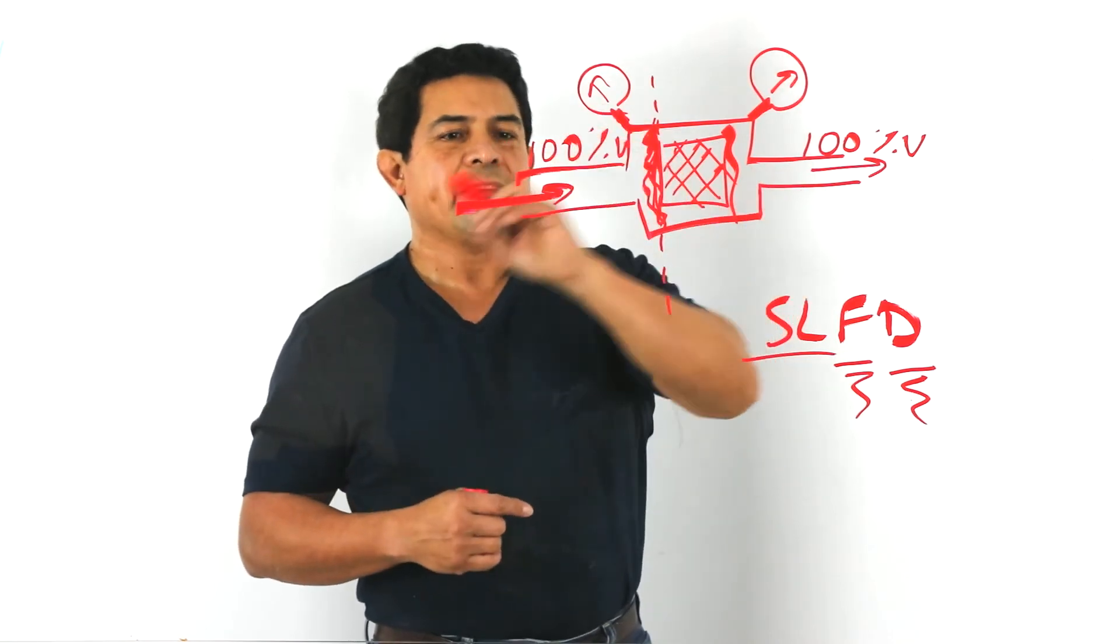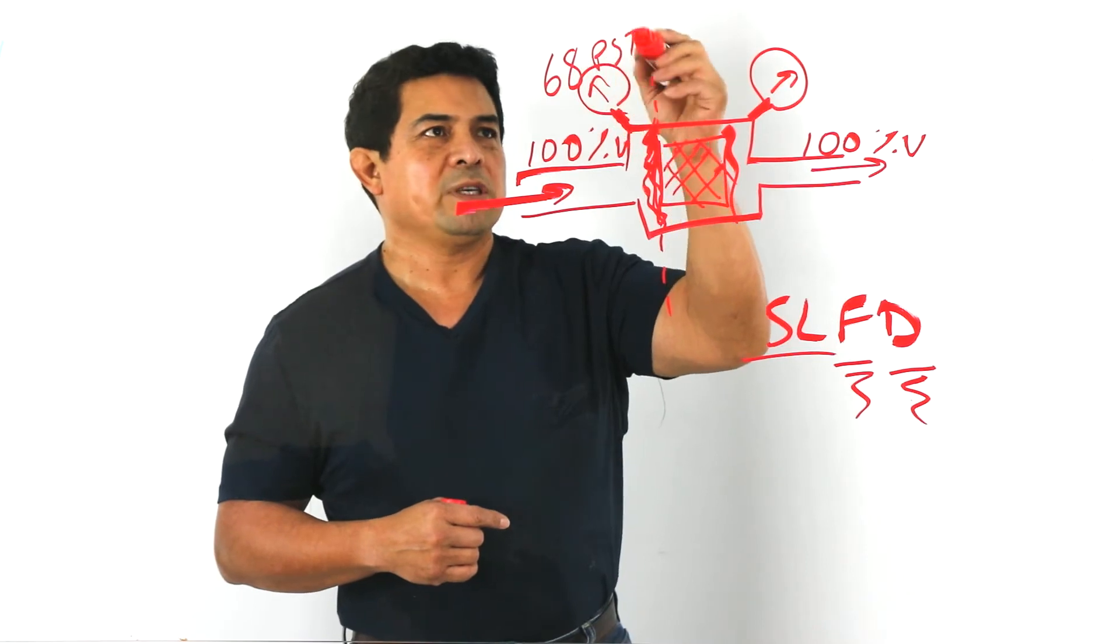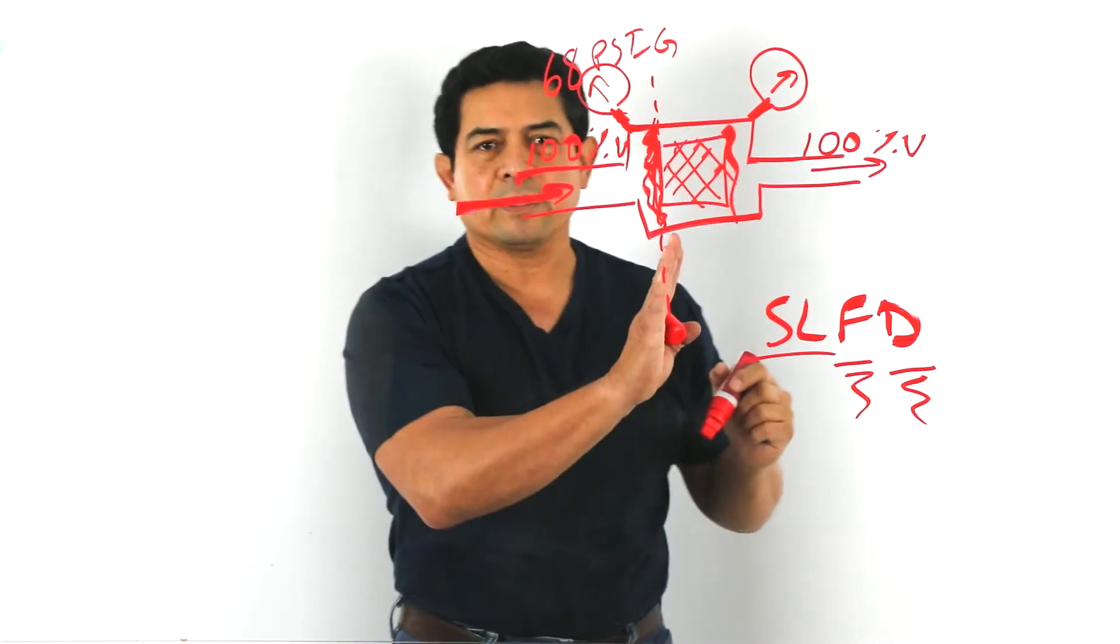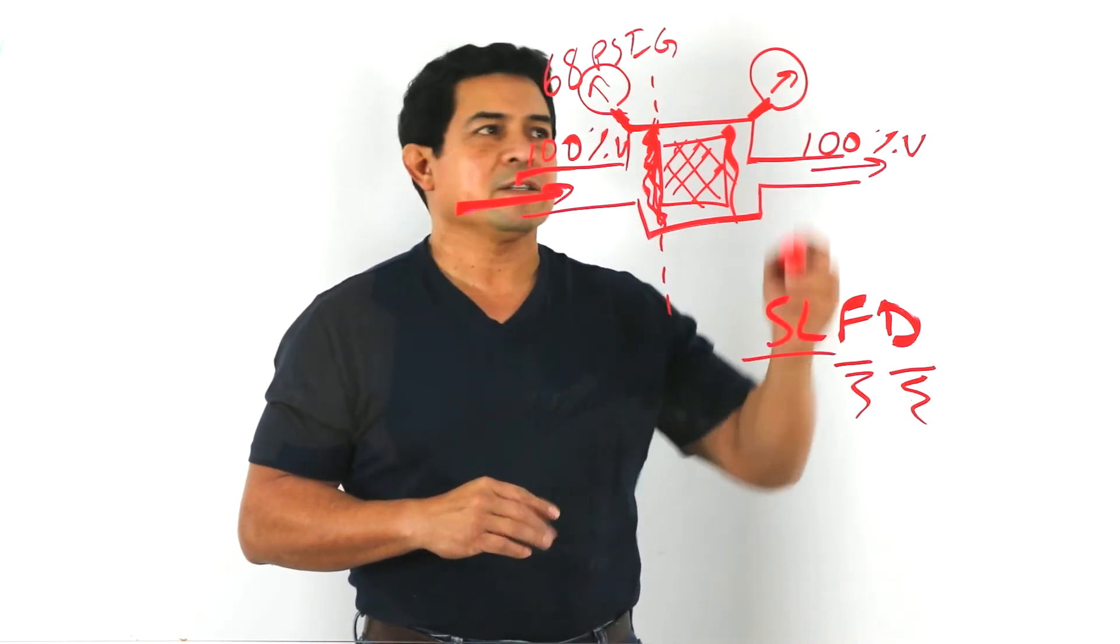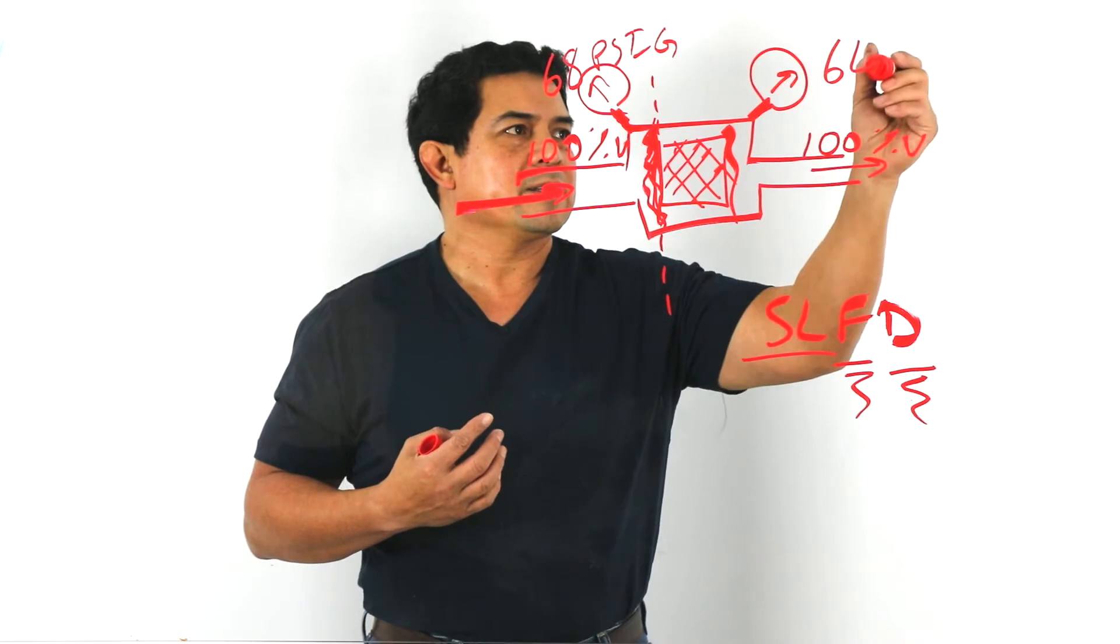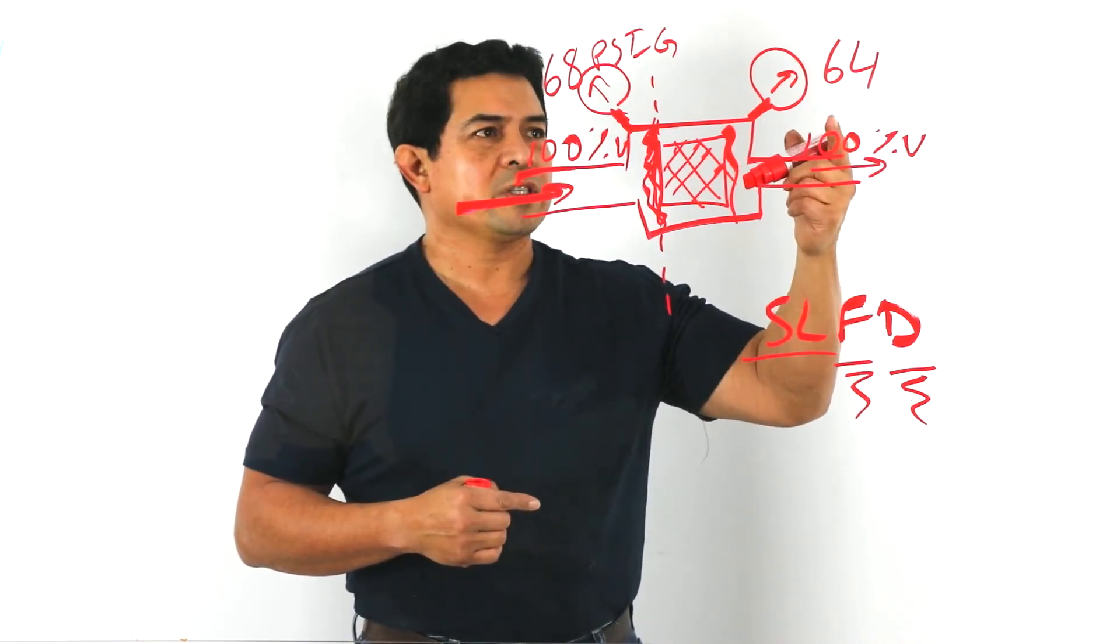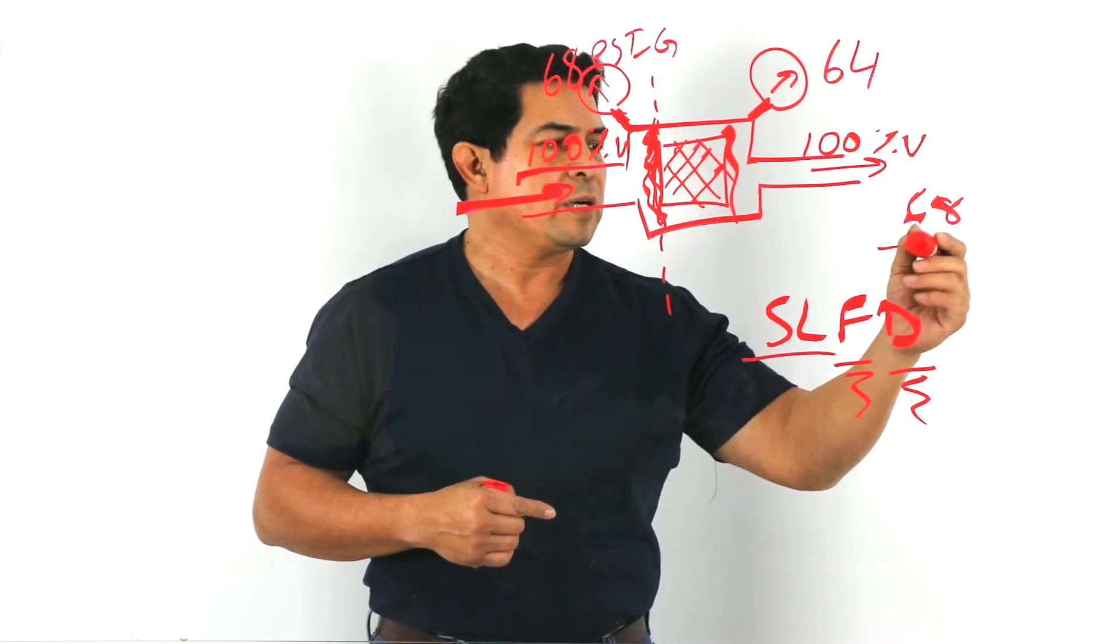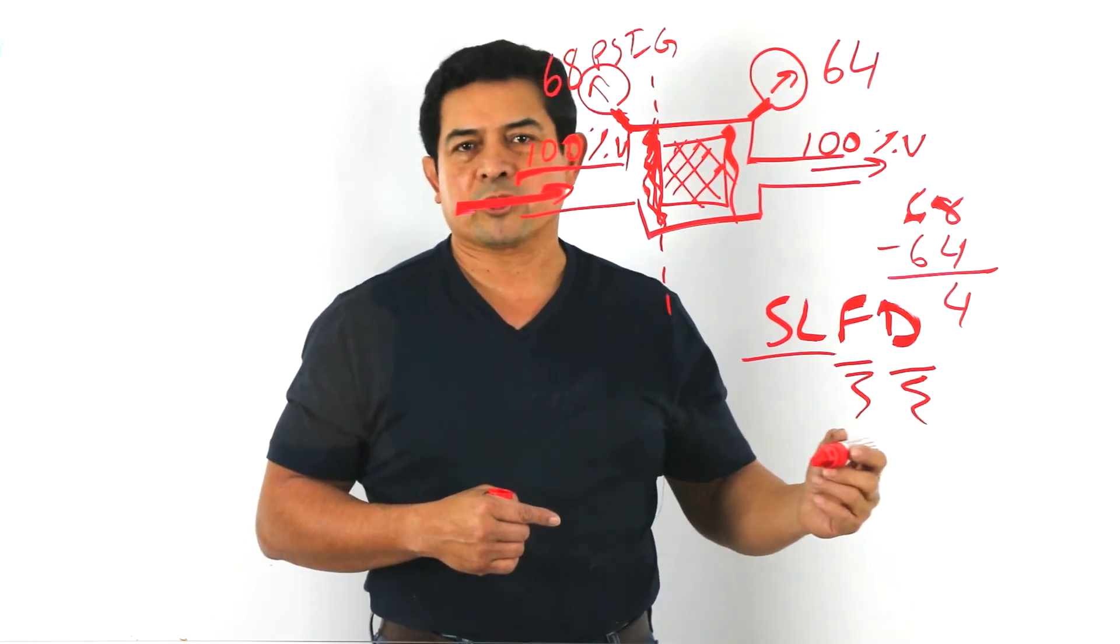So let's say that refrigerant is traveling in this direction and we have 68 psig here. This is creating a restriction, so the pressure on this side now is going to be, let's say, 64. So now we see that's a lower pressure. We have 68 minus 64. That gives us 4 pounds of pressure difference.